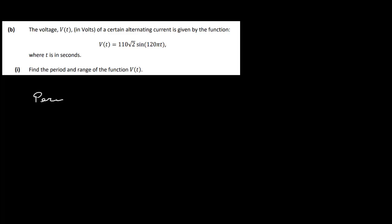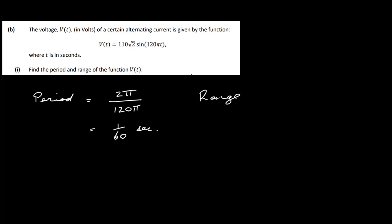Part B: the voltage V(T) in volts of an alternating current is given by V(T) = 110√2 · sin(120πT), where T is in seconds. The period of the function is 2π divided by the coefficient of T, which is 2π divided by 120π, giving 1/60 seconds. The range is plus and minus 110√2.